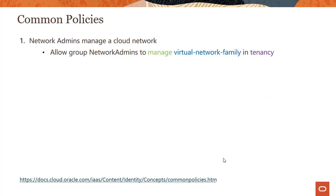Let's look at some common policies. If you want network admins to manage a cloud network, you would write: allow group [group name] to manage virtual network family in tenancy. Virtual network family covers everything provided by virtual networks — your subnets, route tables, gateways, and different kinds of constructs. You could write this policy either in a compartment or a tenancy. In this case I'm doing it in a tenancy, which means it's at the account level, but you could also go more granular.